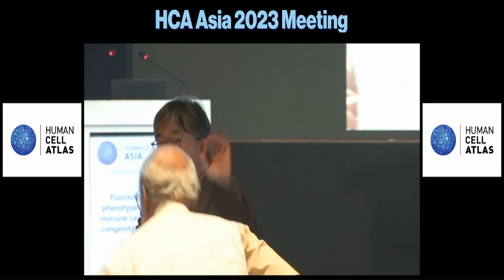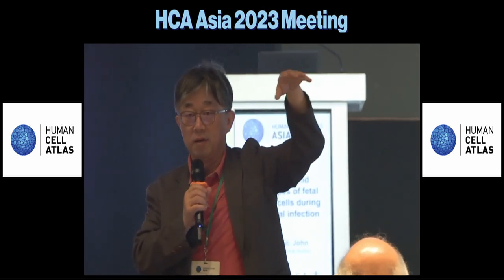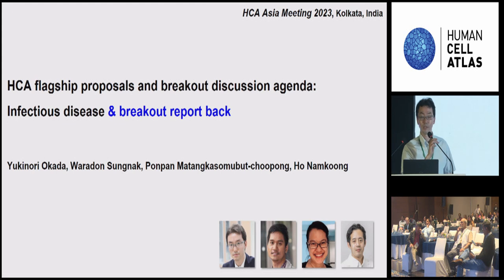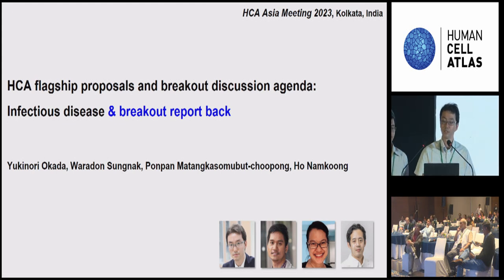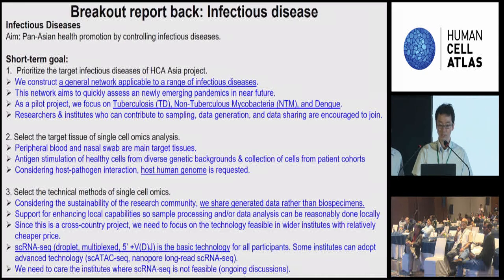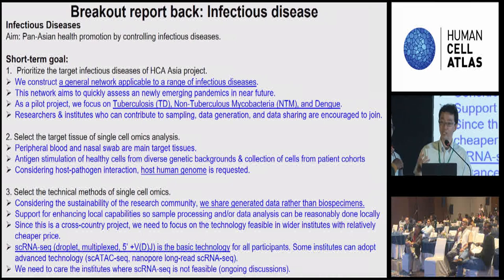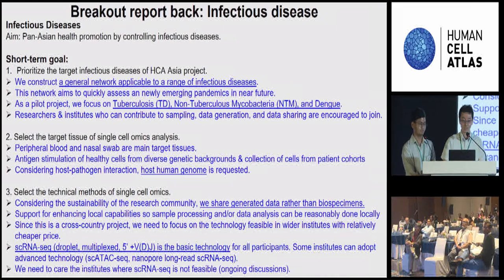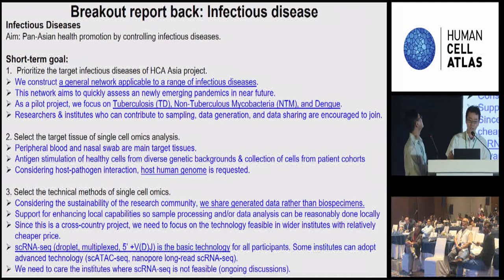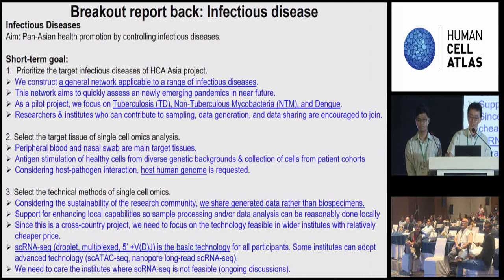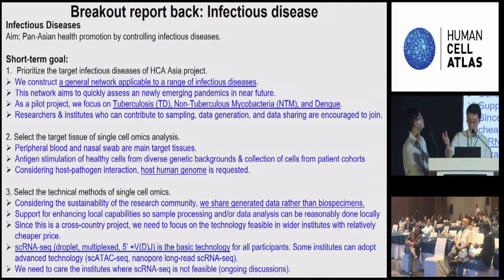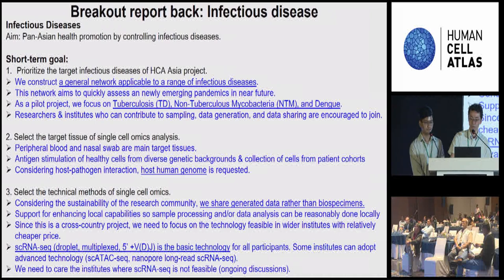Our Asian cancer class breakout session is reported by Tini. We are going to have a quick report back for infectious disease. We have two slides for Q&A summary. So going to a quick summary: short term, first we discussed which disease to target. The conclusion was we need a general network covering a range of infectious diseases, not only a single disease, but a broader range. We focus on three major targets: tuberculosis, NTM, and dengue.